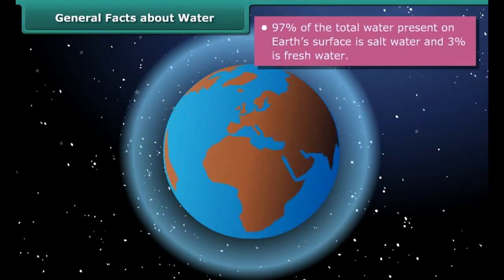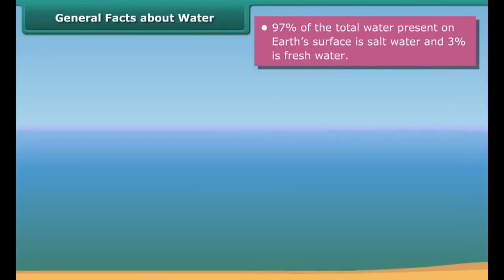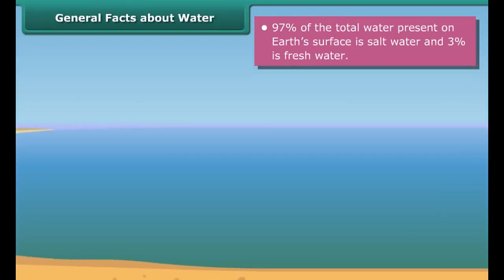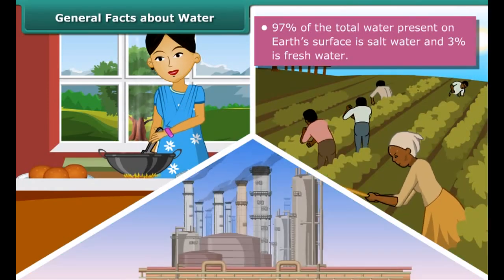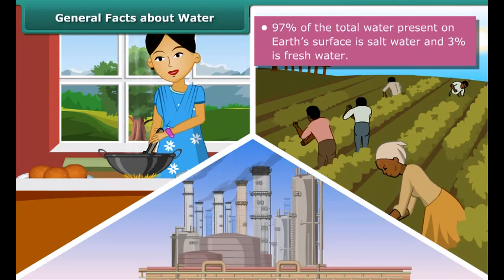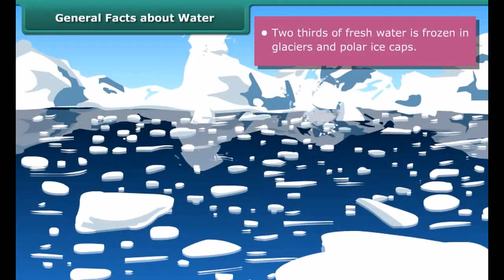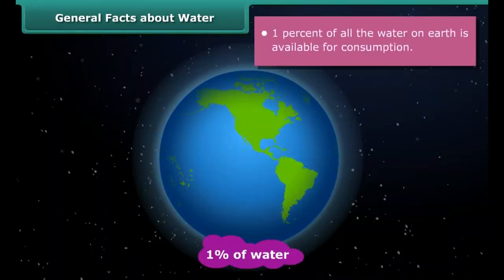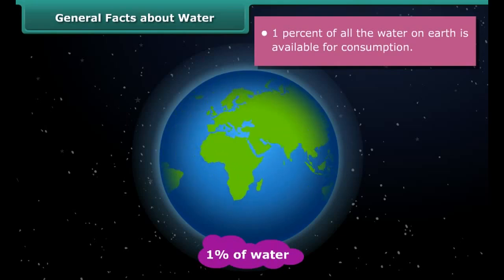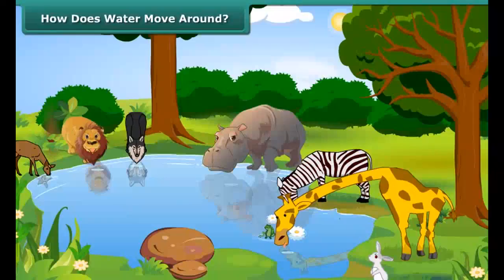97% of the total water present on earth's surface is salt water, so it is not safe for household, agricultural and industrial consumption. The remaining 3% is fresh water, two-thirds of which is frozen in glaciers and polar ice caps. That means roughly only 1% of all the water on earth is available for consumption.